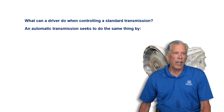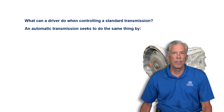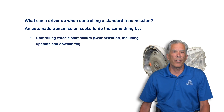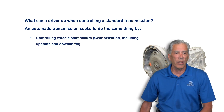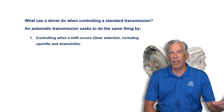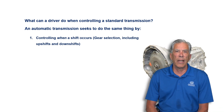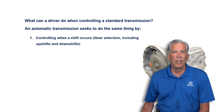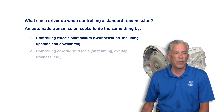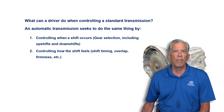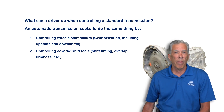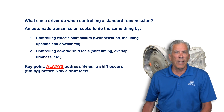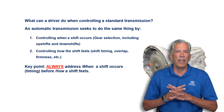An automatic transmission seeks to do the same thing by controlling when a shift occurs — this is gear selection, including upshifts and downshifts. If you're going up a grade it's going to shift a lot later than if you're going down a grade, so it seeks to determine the best gear for the conditions available. As for how it feels: if you're stepping on the throttle harder you're going to feel firmer shifts than if you're in a parking lot with a light shift condition.